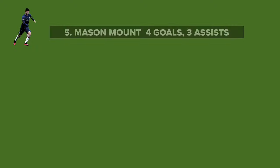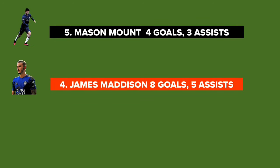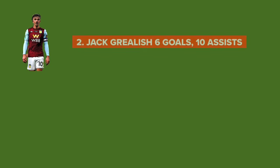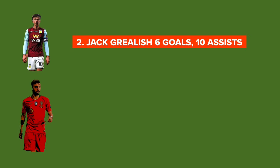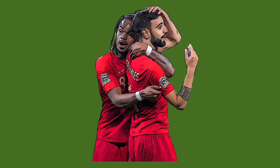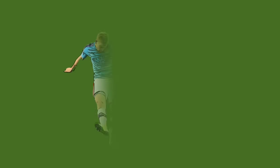Looking at five of the top attacking midfielders in the Premier League this season, we can see how influential they've been. Mason Mount has scored four goals and assisted three, with James Maddison scoring eight goals and assisting five. Kevin De Bruyne has assisted a huge 10 goals this season while scoring three himself. Villa's Jack Grealish has got six goals and 10 assists, and Bruno Fernandes, the Man United star player, has got 15 goals and 10 assists this season. These goal and assist tallies show that these players can create space to get on the ball, which allows them to execute the pass and set up their teammates.